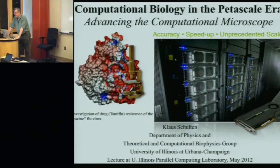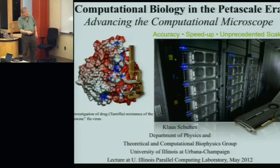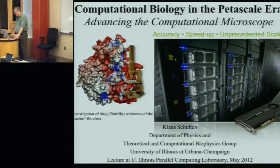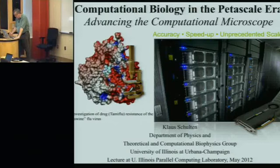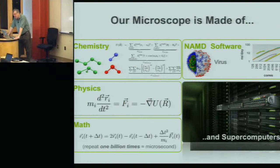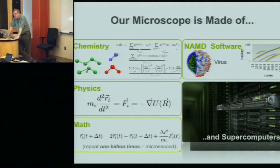You might have recognized that this is where Tamiflu resides. This is a kind of microscope we have actually built over 20 years jointly with Sanjay Kale. Our microscope is a little bit different from a normal microscope — the normal microscope has metal tubes and glass lenses. Our microscope is made instead of knowledge, mainly from chemistry. Chemistry knows what kind of atoms and forces act between atoms that make the molecules found in the machinery of living cells.